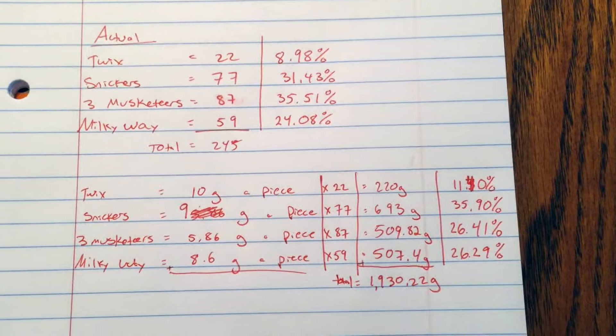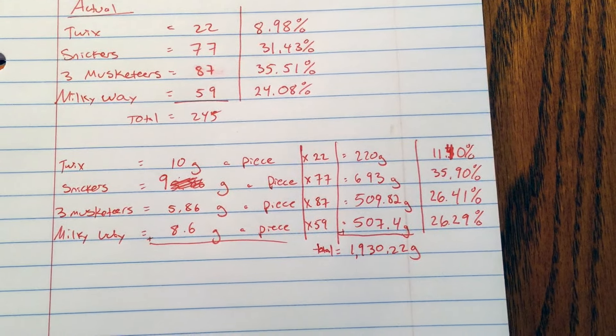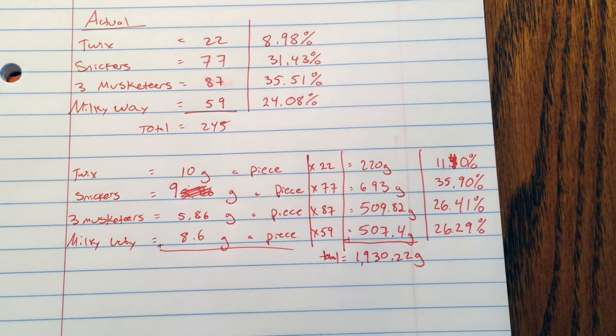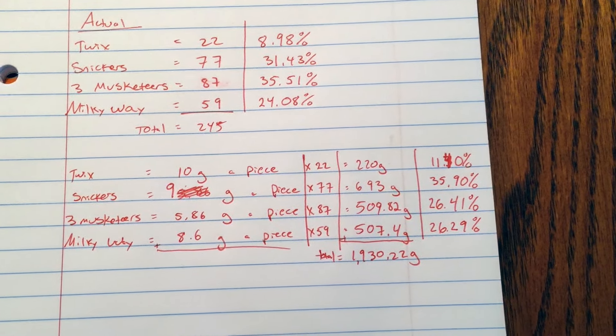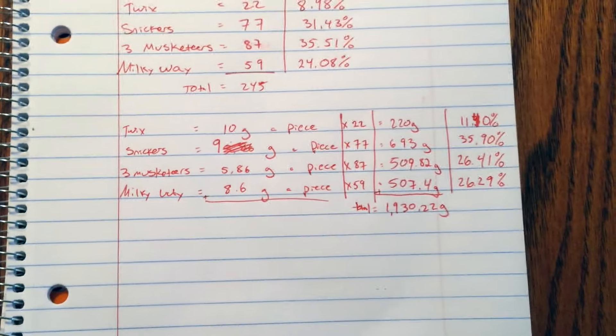So it's higher than the percent amount. But if you go by the grams, 26.41% were actually Three Musketeers, and 26.9% were the Milky Way. So again, the Twix are purposely a lot less than the other pieces of candy.